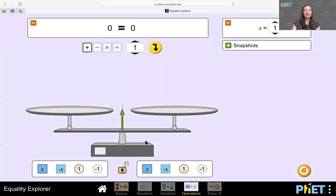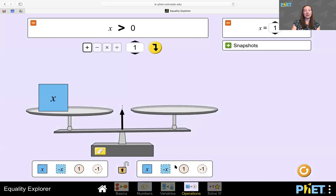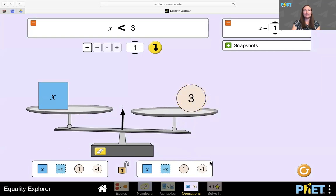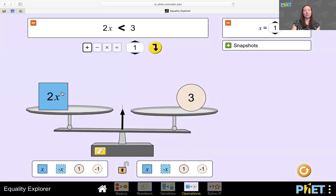On the operations screen, I can add objects up here, but they look a little bit different because now they're actually combining as opposed to being separate objects. And I have a tool up here that allows me to apply an operation to both sides of the equation.